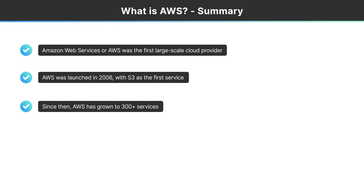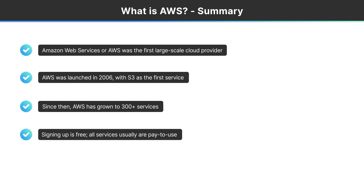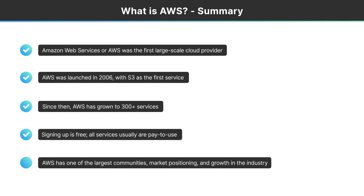Don't panic — you're only going to learn about maybe 20 to 30 of those services at the most superficial level. You won't need to deploy, master, design, or architect them. At this level, you really just need to be able to talk about AWS. Signing up is free — you just need a phone number and a credit card. Most services have a free tier, though some are paid to use, like virtual machines. AWS also has one of the largest communities, the largest market position, and still some of the largest growth among hyperscale cloud providers. Thanks for watching — catch you in the next video.